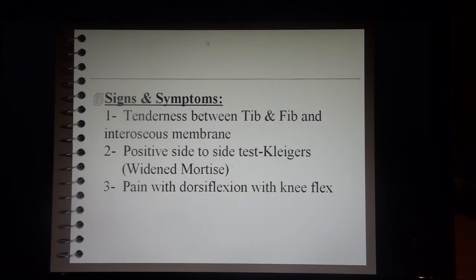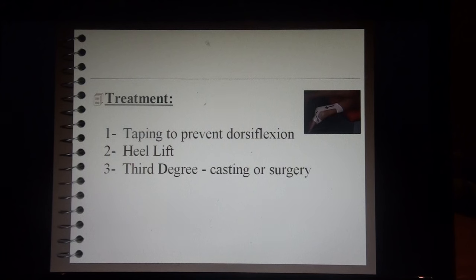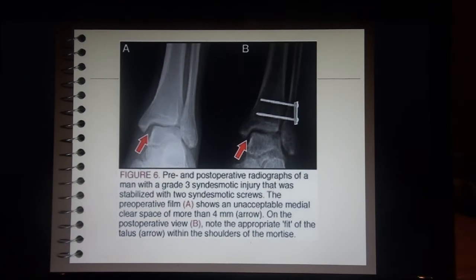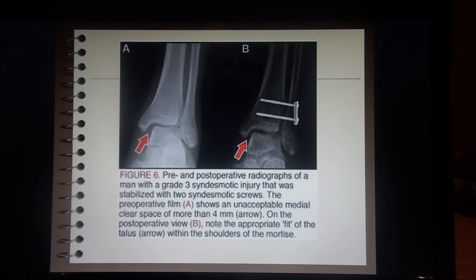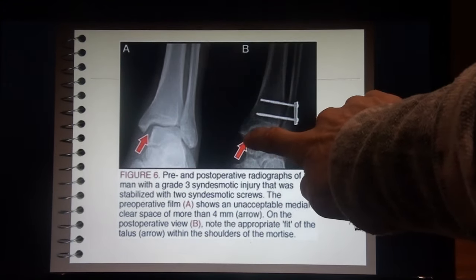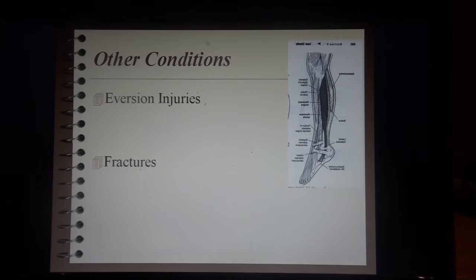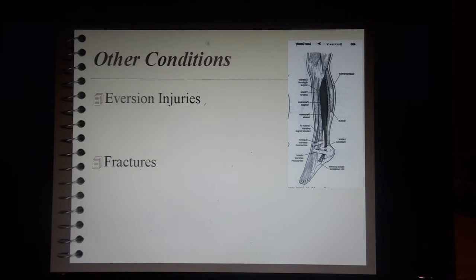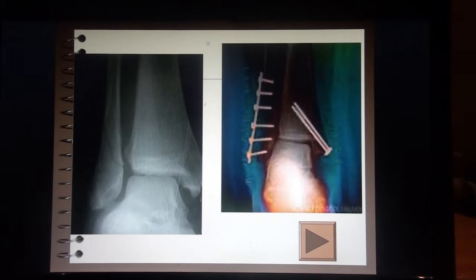We get pain with dorsiflexion because that makes those joints open up, and also with knee flexion. For treatment, we want to tape to prevent dorsiflexion and probably use a heel lift. With a third degree, we'll likely need a cast and possibly surgery — to close the widened mortis space, sometimes screws are used. An eversion ankle sprain affects the deltoid ligaments, and fractures can also occur with ankle injuries.